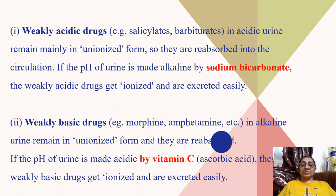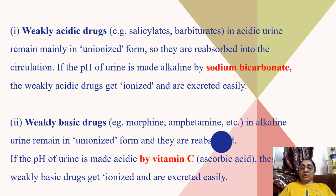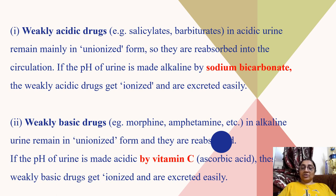Weakly acidic drugs such as salicylate and barbiturate remain mainly in unionized form in acidic urine and are reabsorbed into the circulation in the distal tubule. If the pH of urine is made alkaline by sodium bicarbonate, these drugs ionize and are excreted in urine easily. Weakly basic drugs like morphine and amphetamine remain unionized in alkaline urine and are reabsorbed in the distal tubule. If urine pH is made acidic by vitamin C, these drugs ionize and are excreted easily.